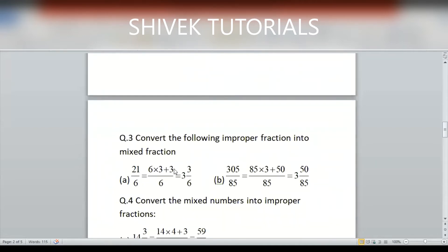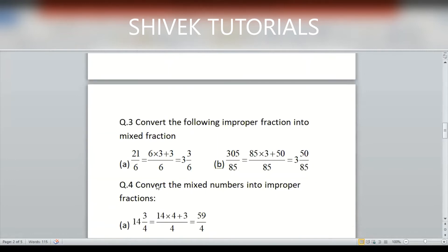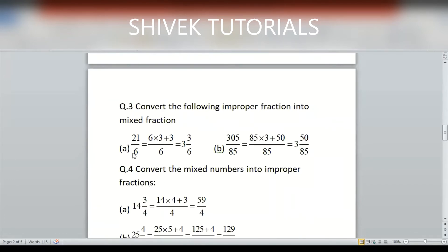Convert the following improper fractions into mixed fractions. For 21/6: divide 21 by 6. 6×3 = 18, remainder 3. So the mixed fraction is 3 and 3/6.